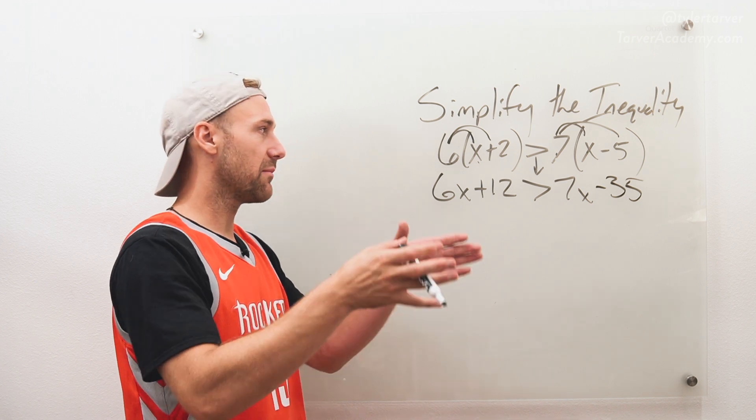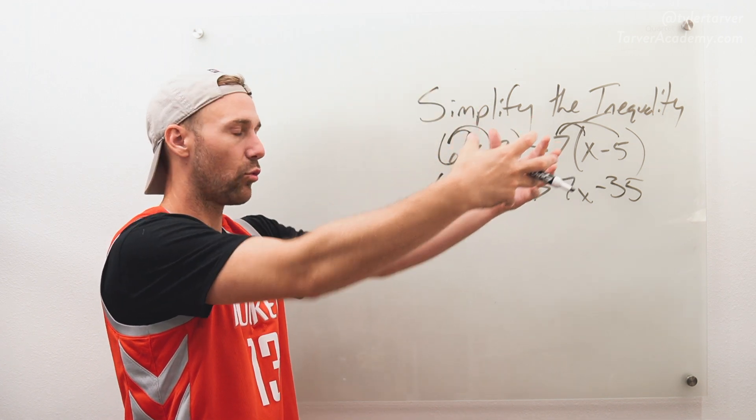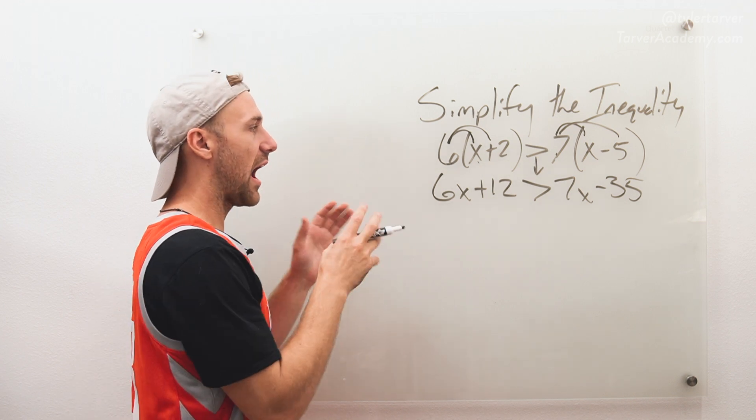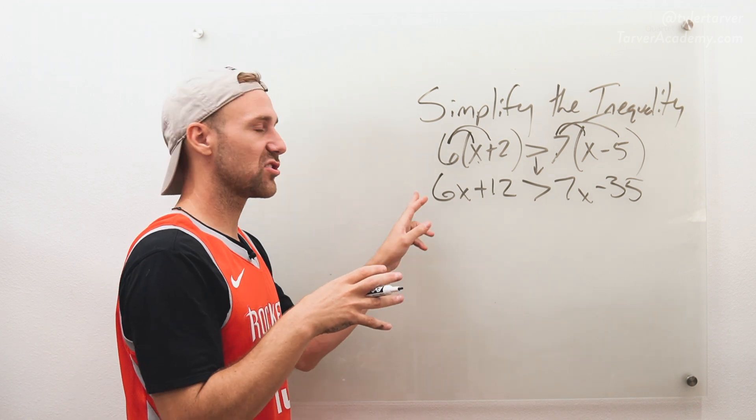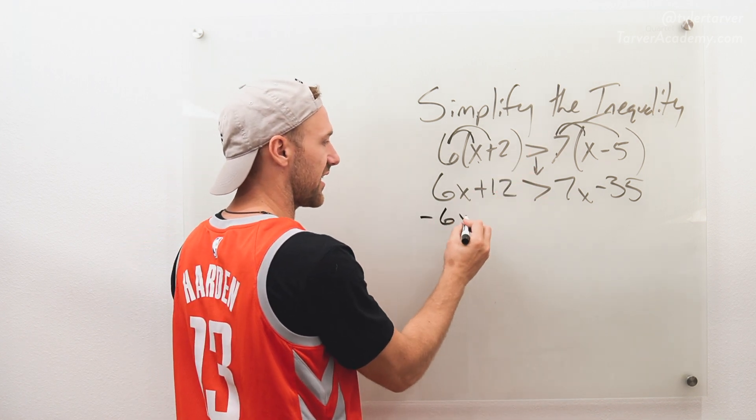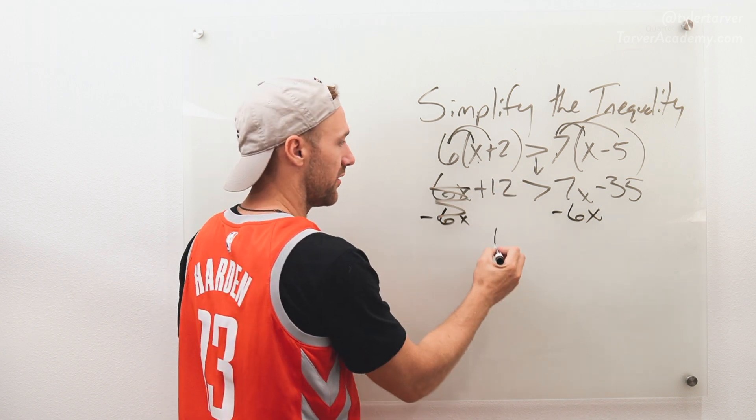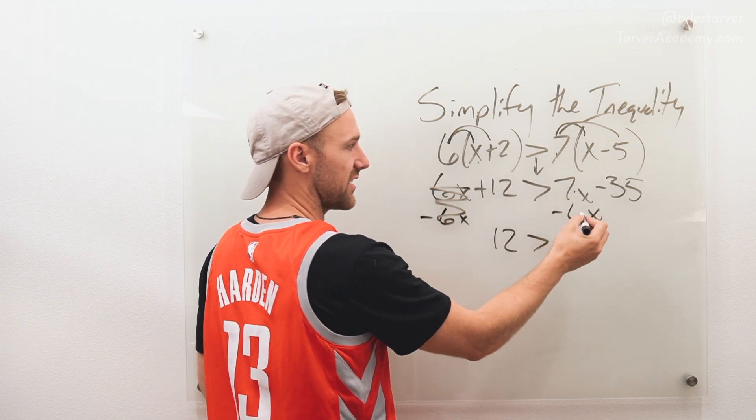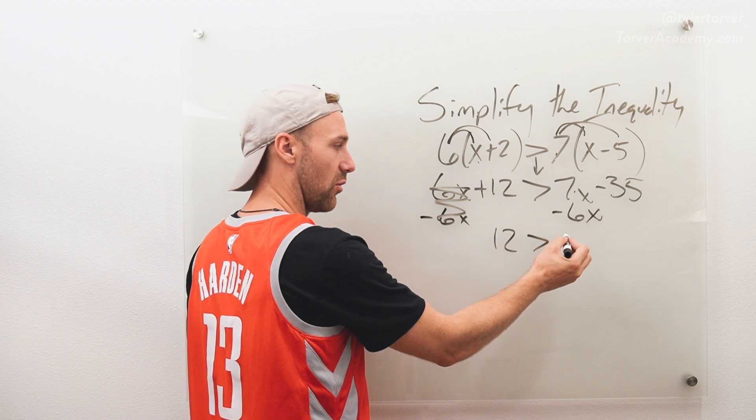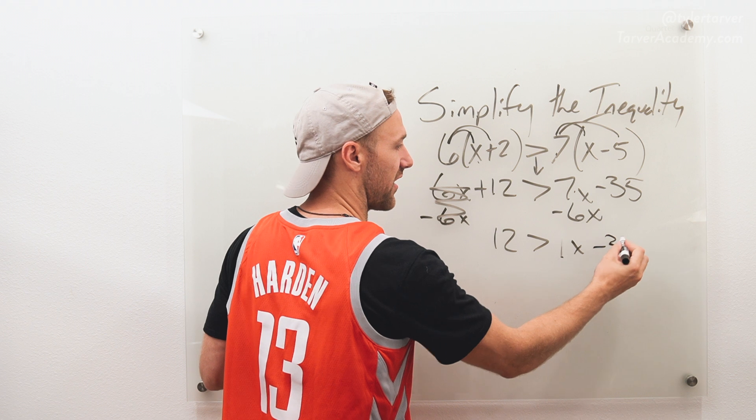Okay, now I want to get my x's to the same side and I want to get my regular numbers to the same side. So I always say go to where you're getting the smallest number with the x to the other side with the larger number. So I'm gonna subtract six x from both sides. That'll allow it to disappear here. We've got twelve is greater than seven x minus six x is one x, which anything times one is itself, minus thirty-five.